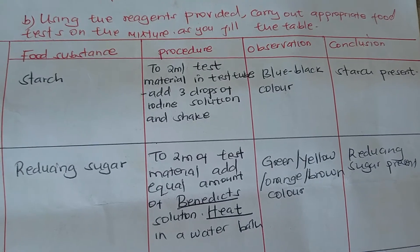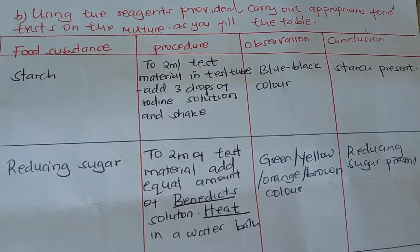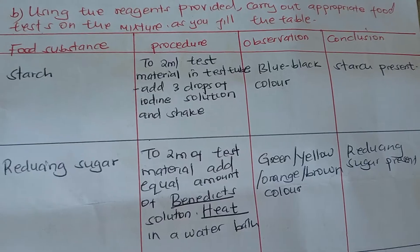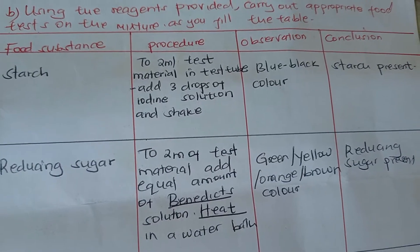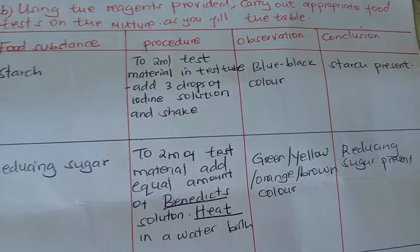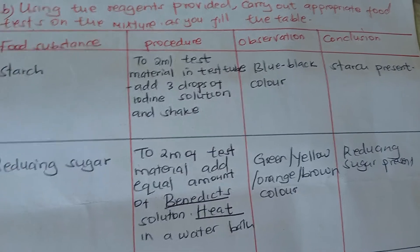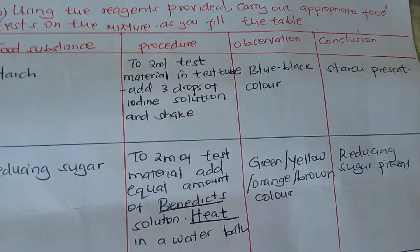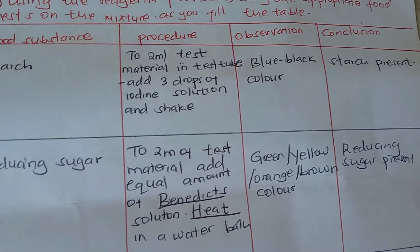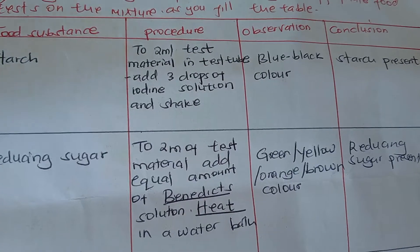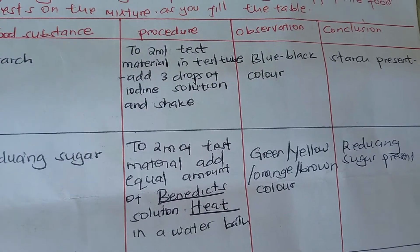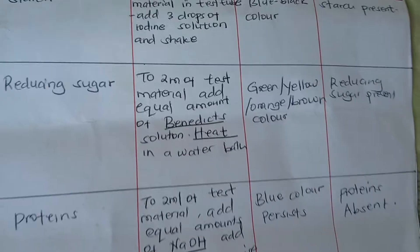Using the reagents provided, you are supposed to test for starch. Put 2 ml of the test material in a test tube, then add three drops of iodine solution and shake. You will see a blue-black color, which concludes that starch is present.